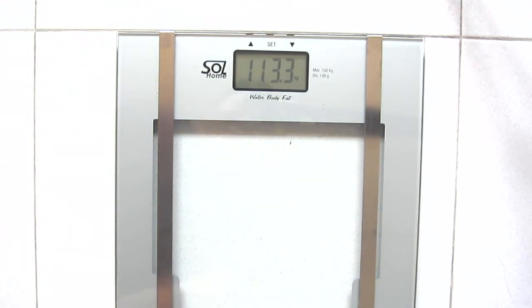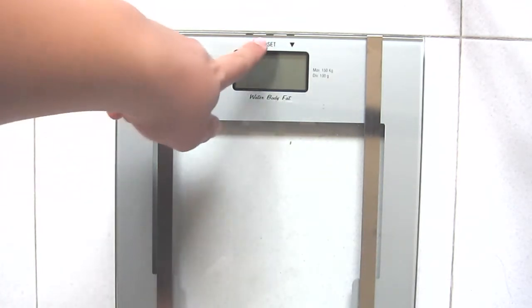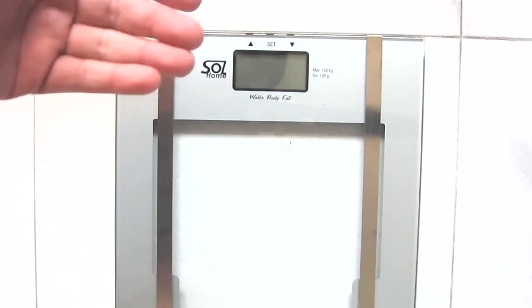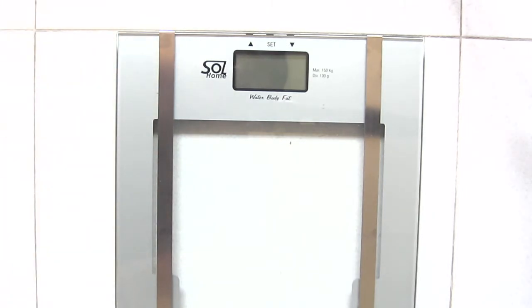If you want to get your body content, you see this set button, this up and down buttons? This is where you input your age and your height. This machine has 10 memory slots.